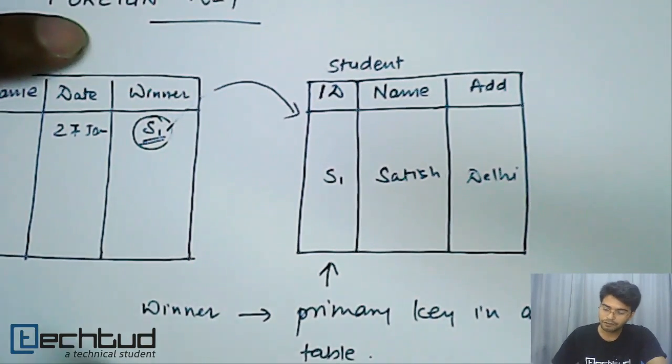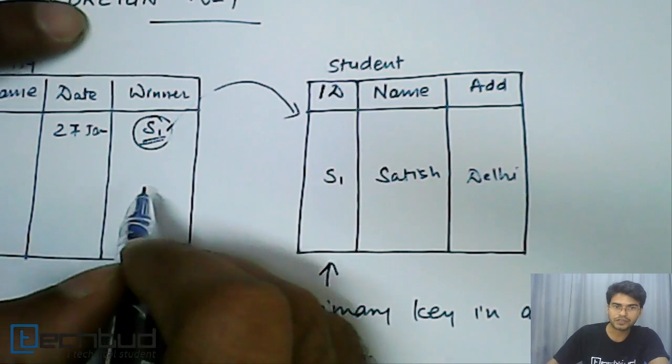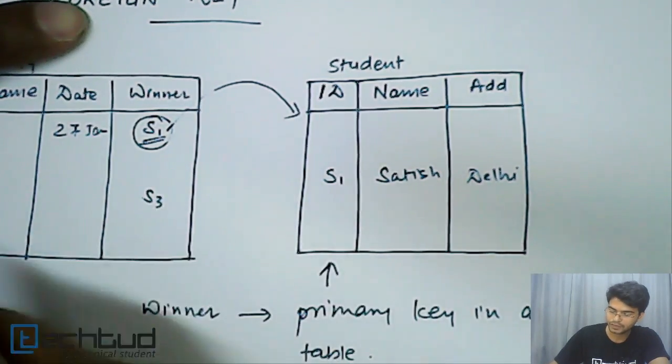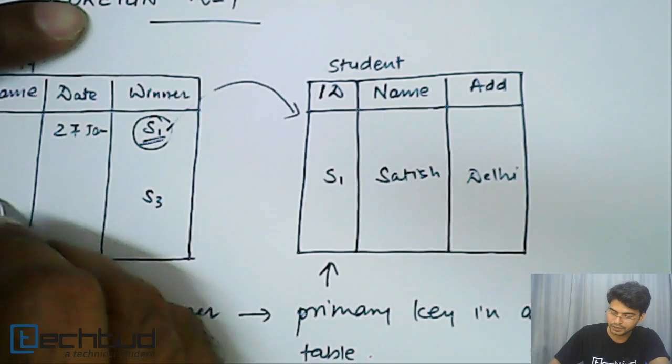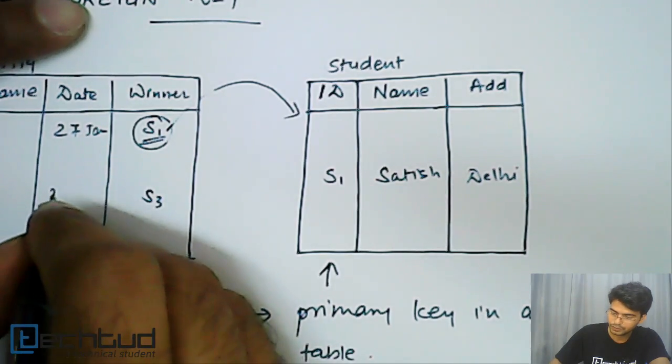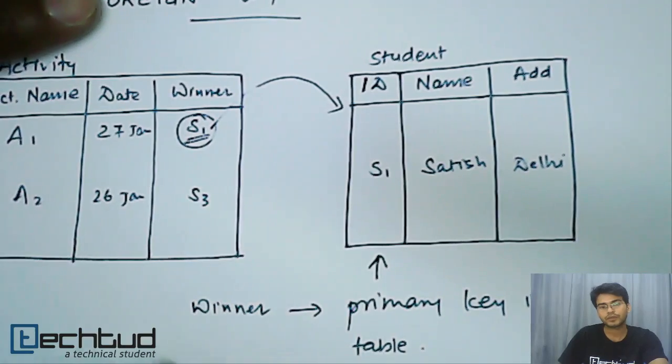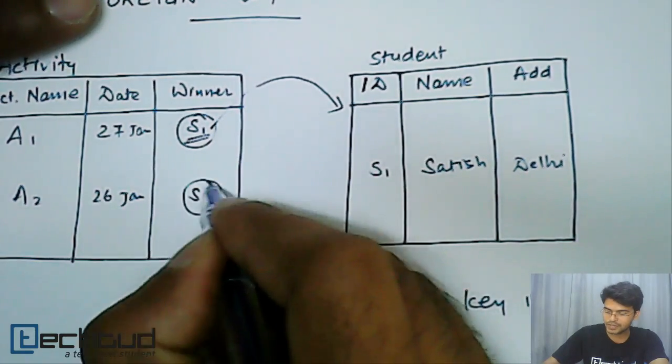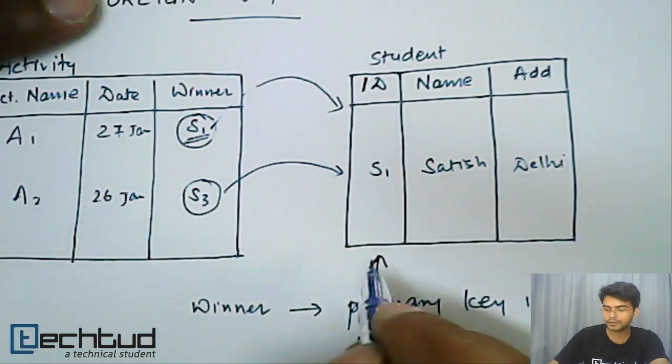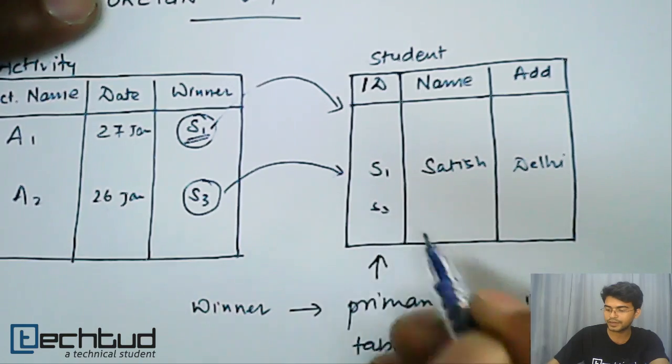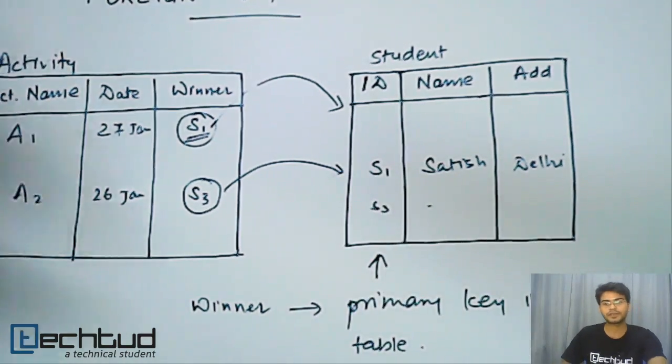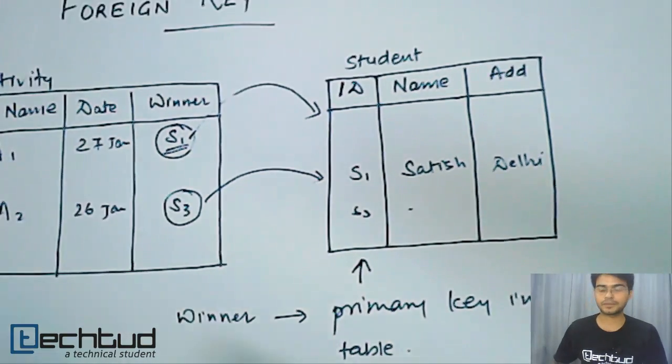Similarly, if we have another student, we will just refer it to let's say S3 in some particular event A2. So now we will again through this S3 we will refer another table and we will find out who is S3. So we will find S3 and then we will find another details of that particular student.